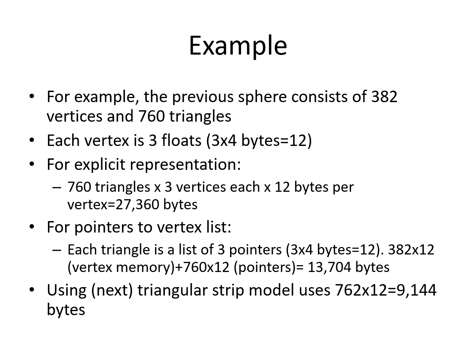This is an example of storage size. The sphere on the previous slide has 760 triangles and 382 vertices. Each vertex will be stored as 3 floats, which is 12 bytes. For the explicit representation, each triangle is 36 bytes for the three points, and for 760 triangles, this will equate to 27,360 bytes. For the pointers to a vertex list, the vertex list will occupy 382 times 12 bytes, and the triangles will occupy 760 times the 12 bytes that are used for the pointers. In total, this is 13,704 bytes.